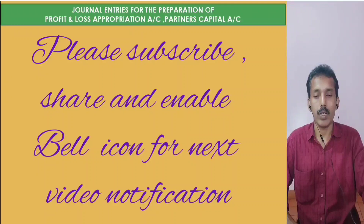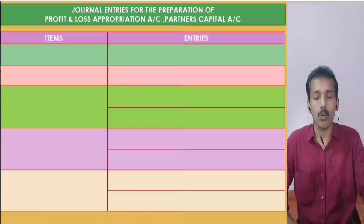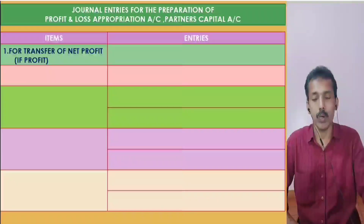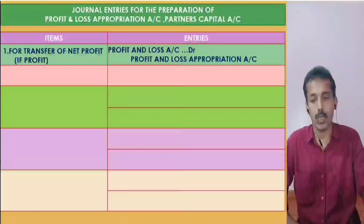For the general journal entries in preparation of the Profit and Loss Appropriation Account: for transfer of net profit, the entry is — Profit and Loss Account Dr., to Profit and Loss Appropriation Account.